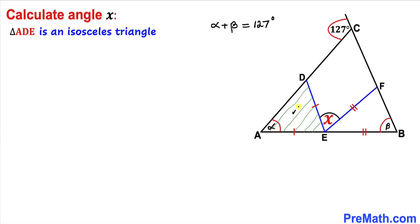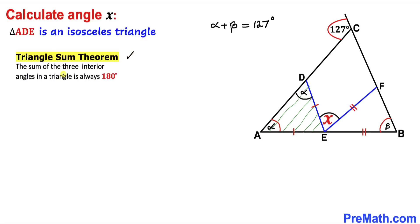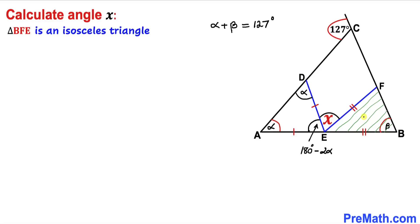Let's focus on triangle ADE. We know this is an isosceles triangle since AE equals DE. So if this angle is alpha, this angle must be alpha as well. Applying the triangle sum theorem — the sum of three interior angles is 180 degrees — this third angle equals 180 degrees minus 2 alpha.